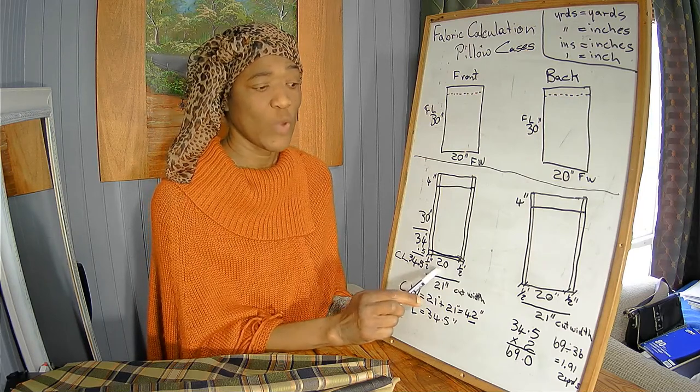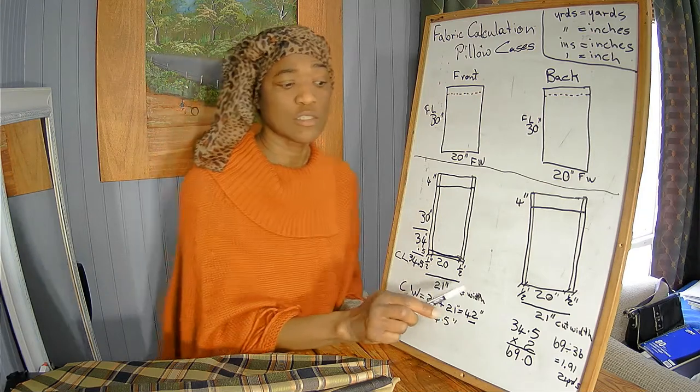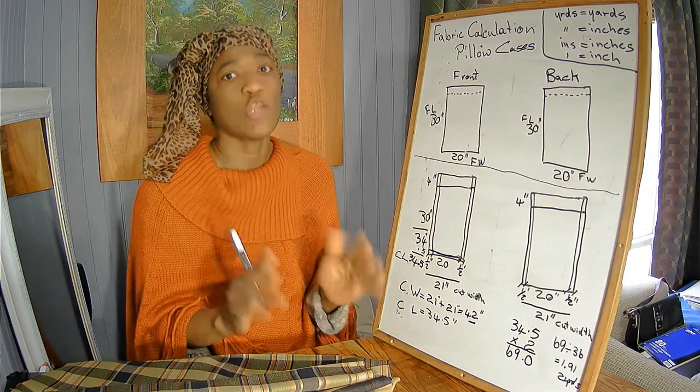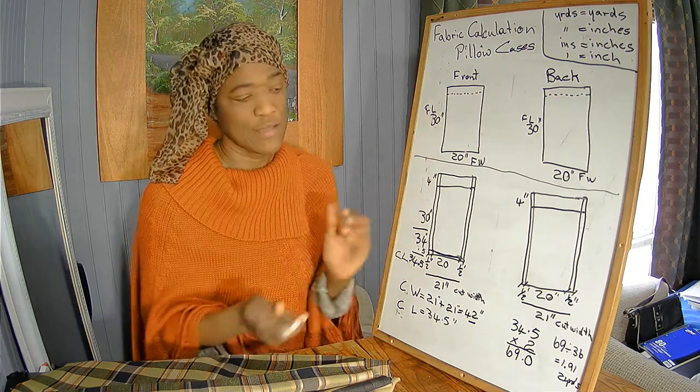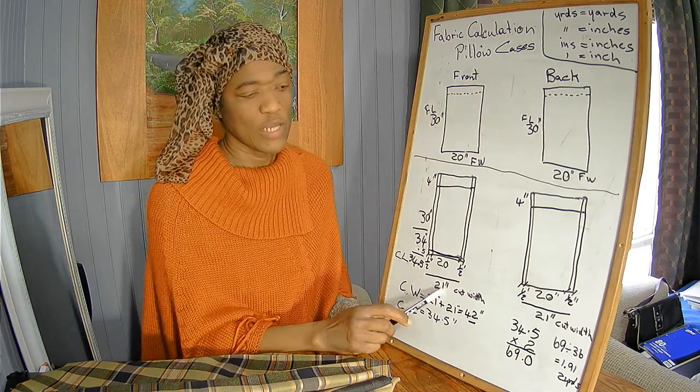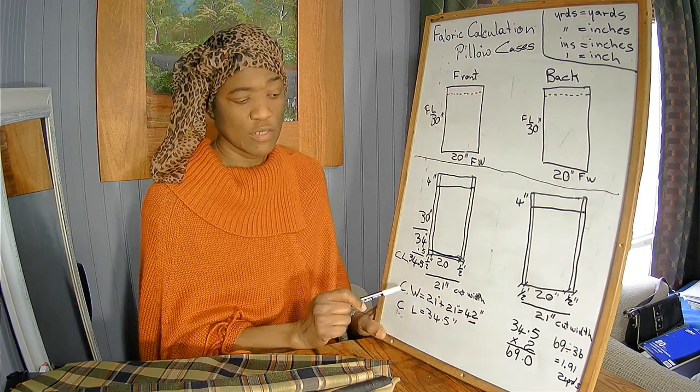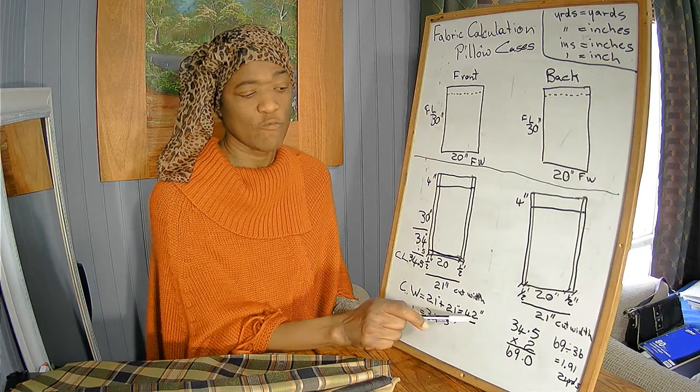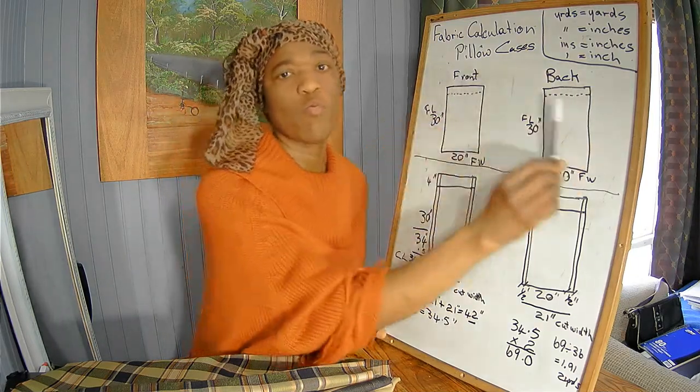That's 20 inches for your finish width, so that's 21 inches for your cut width. That is how much fabric you're cutting in order to be able to stitch and get your finished pillow at the right size. So 21 inches plus 21 inches equals 42 inches. The overall width that we will need for our pillowcase is 42 inches.